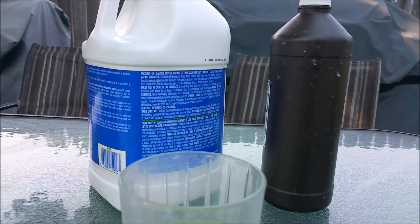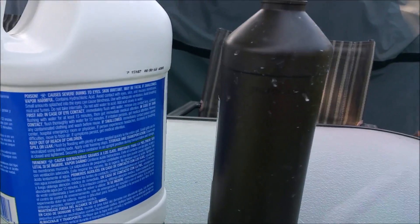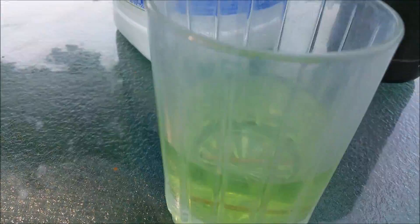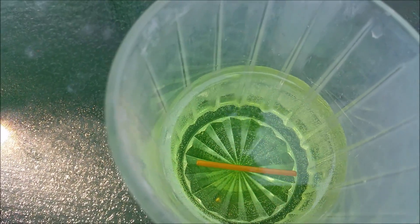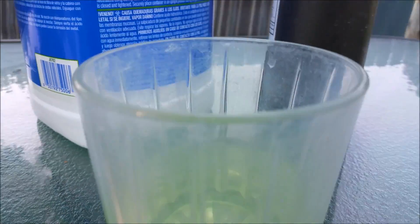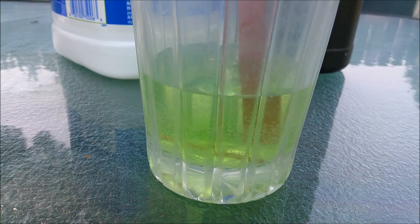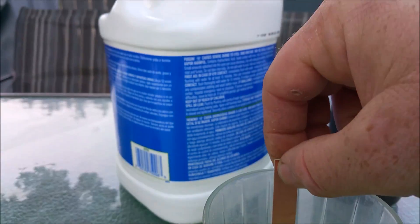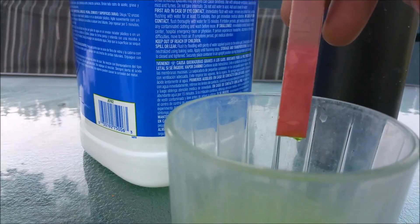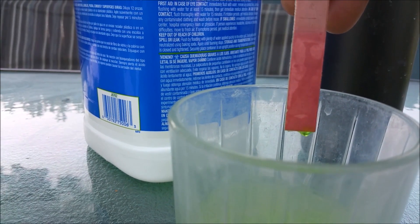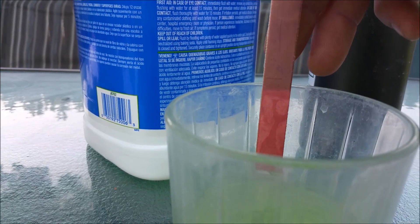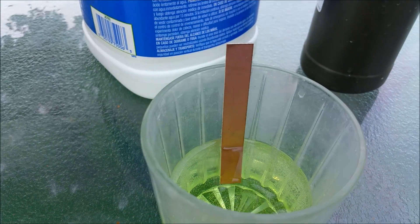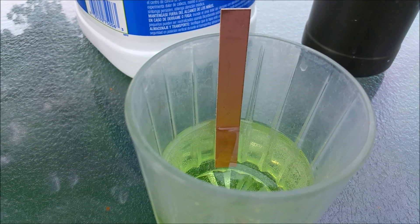So we're playing backyard chemist today. A little bit of chooch A, a little bit of chooch B - copper phenolic. Here's a piece of copper wire we've been letting soak for about a minute. Stir this a little bit. Look at this, yeah, brand new. Check this out. Let that sit for a minute. Backyard chemistry.